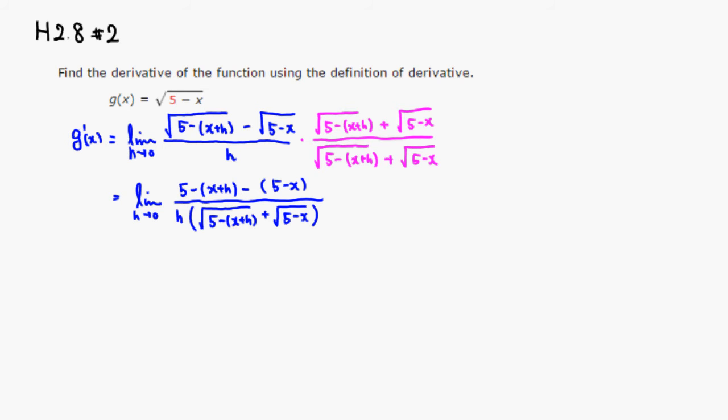Then we can cancel a bunch of things. We got 5 minus 5. So negative x minus negative x. Then we have h on the bottom and h cancel out. But there's a negative sign, so it's going to be negative 1 on top. Then we can say h goes to 0. So this guy disappears.